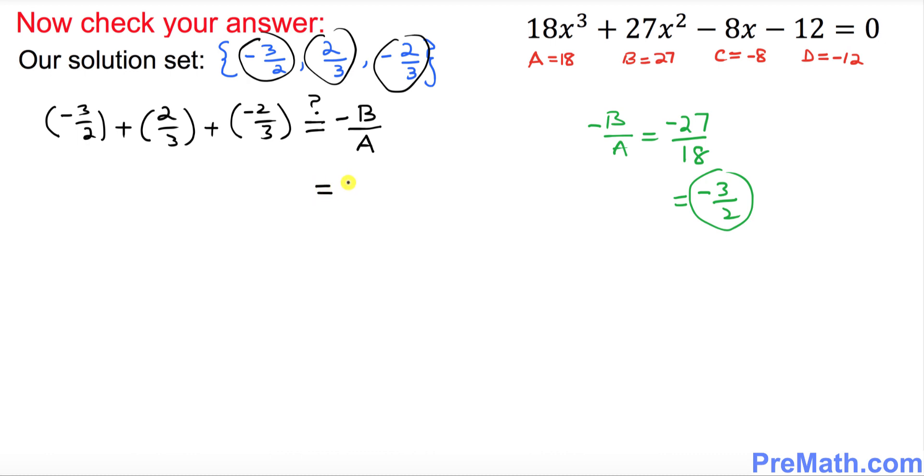So we figured out our -b/a is -3/2. As you can see, these cancel out. On the left hand side we have -3/2. Now question is, is this statement true? Yes, this statement is true. That means our answer is checked.